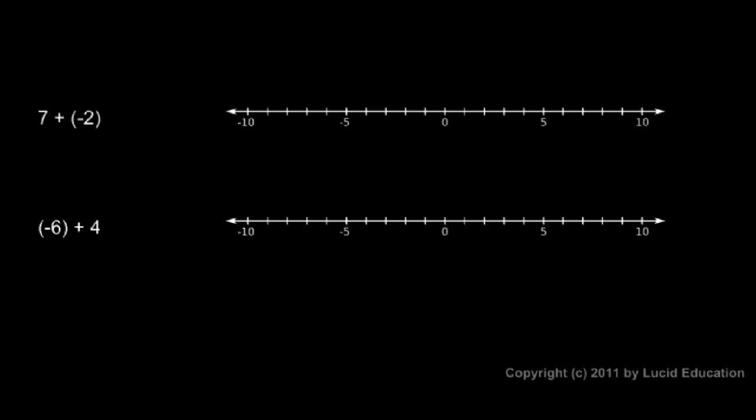If we add numbers with different signs, like in this case we have a positive 7 and a negative 2 and they're being added together, we have to keep in mind that positive means a movement to the right and a negative means movement to the left. So 7 plus negative 2 would look like this.